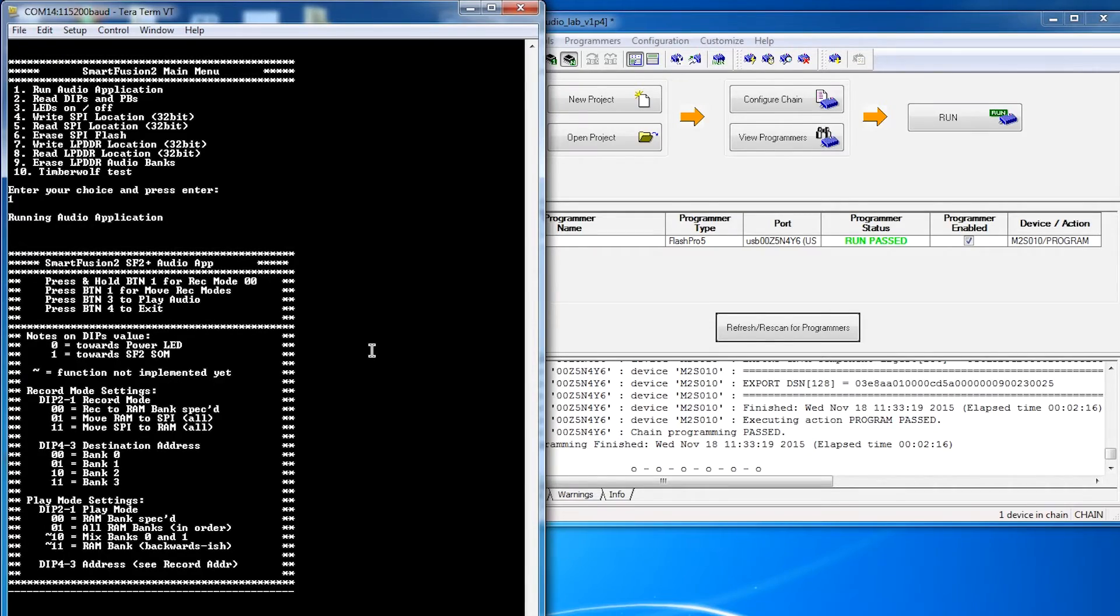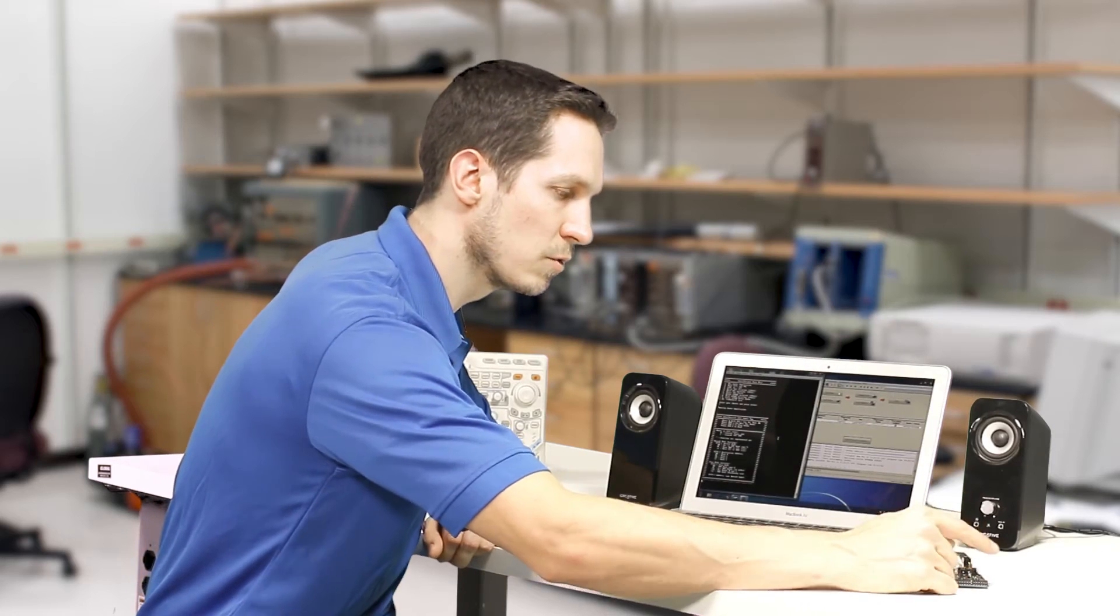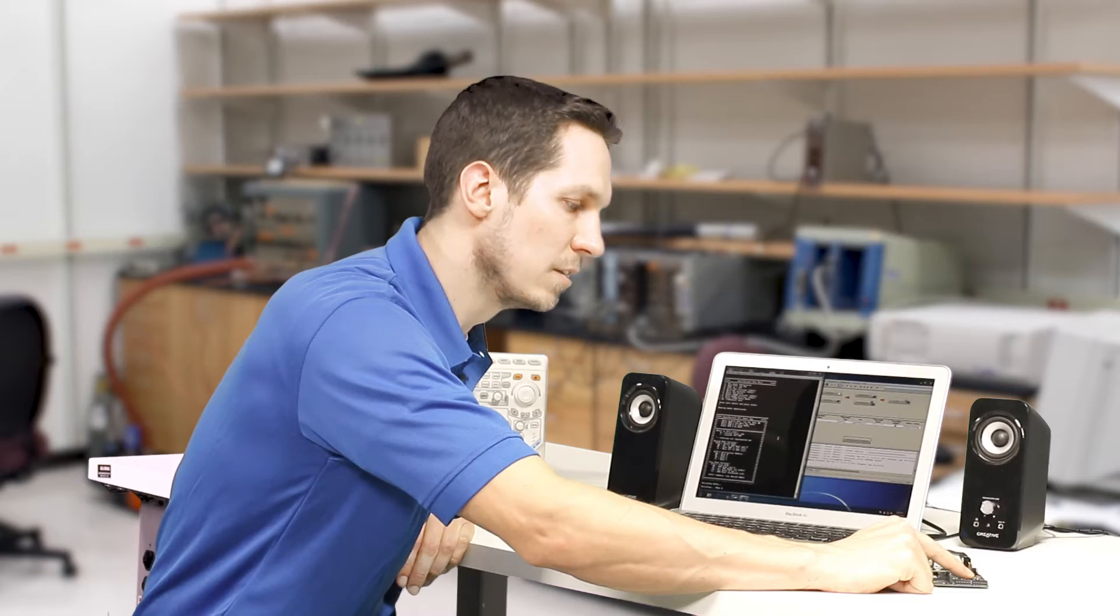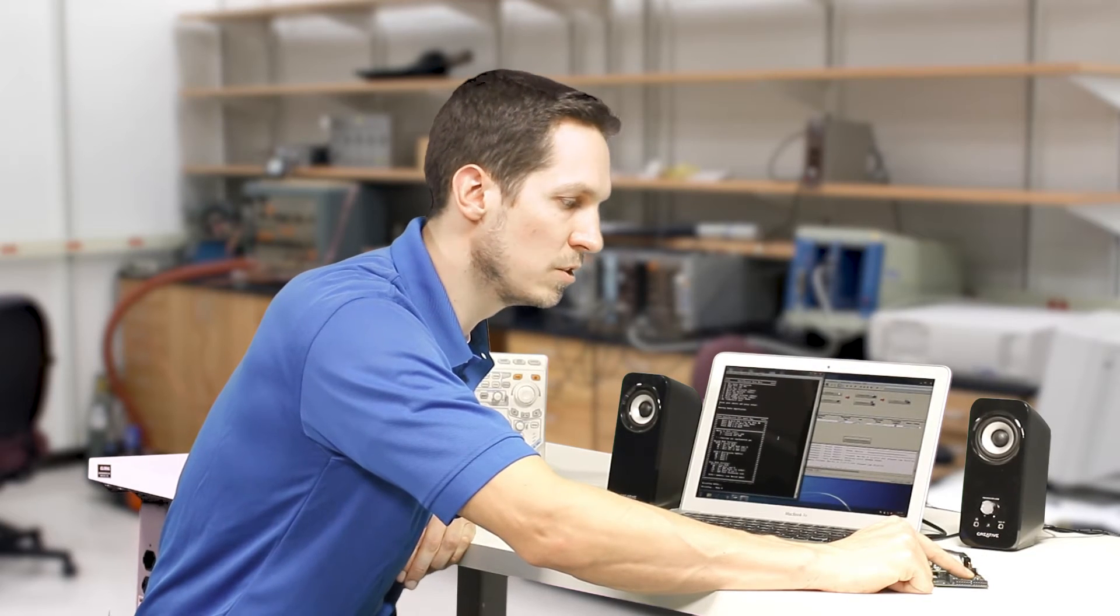It says press and hold button one for record mode. I look here, there are four buttons right here. I'm pretty far away, but I'll just press button one and say, 'This is a test of the SmartFusion 2 development board.'